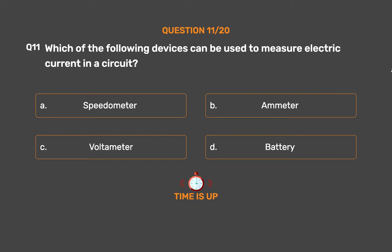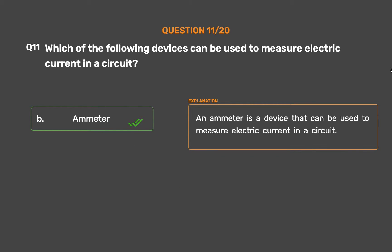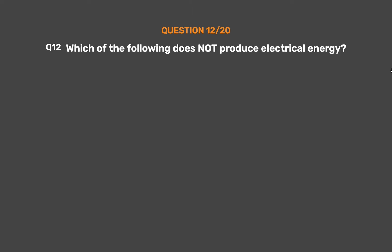The correct answer is Option B: Ammeter. An ammeter is a device that can be used to measure electric current in a circuit.